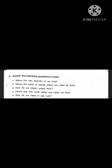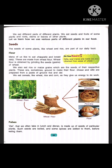Now let's read question number 2: Name the parts of plants which are used as food. Children, we have already learnt that we eat almost all the parts of the plants. So for this question, let's read page number 59: We eat different parts of different plants. We eat seeds and fruits of some plants and roots, stems or leaves of other plants.